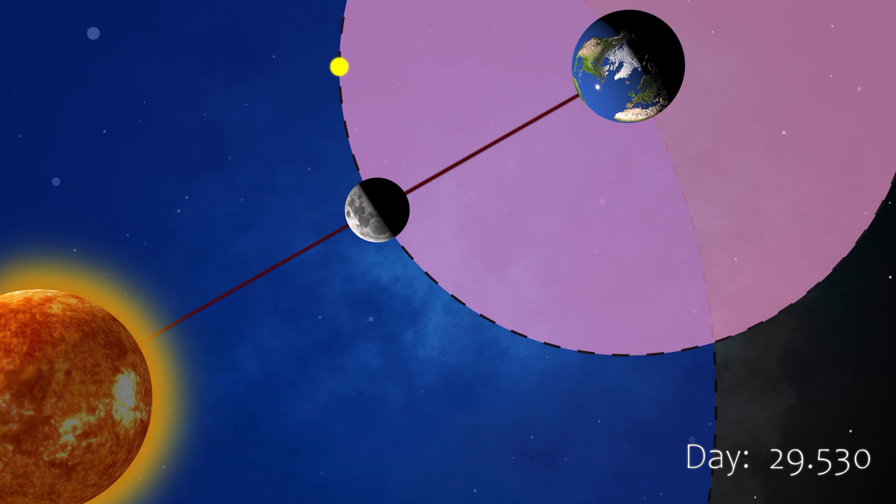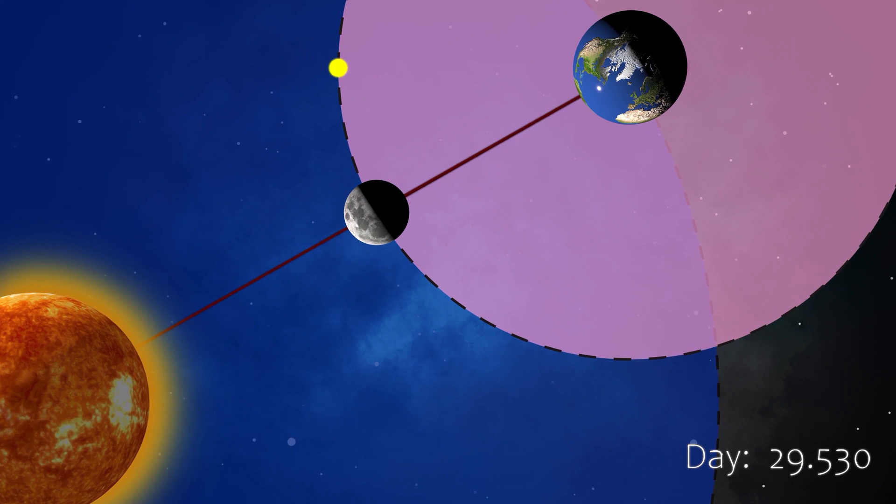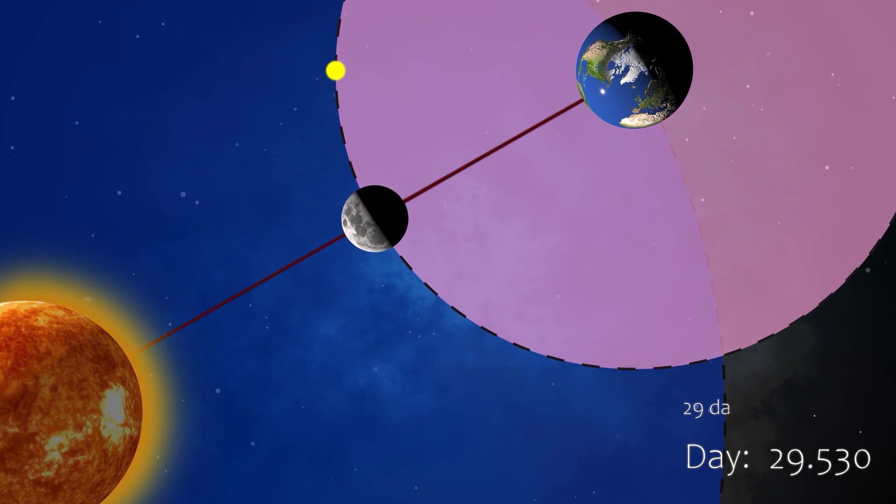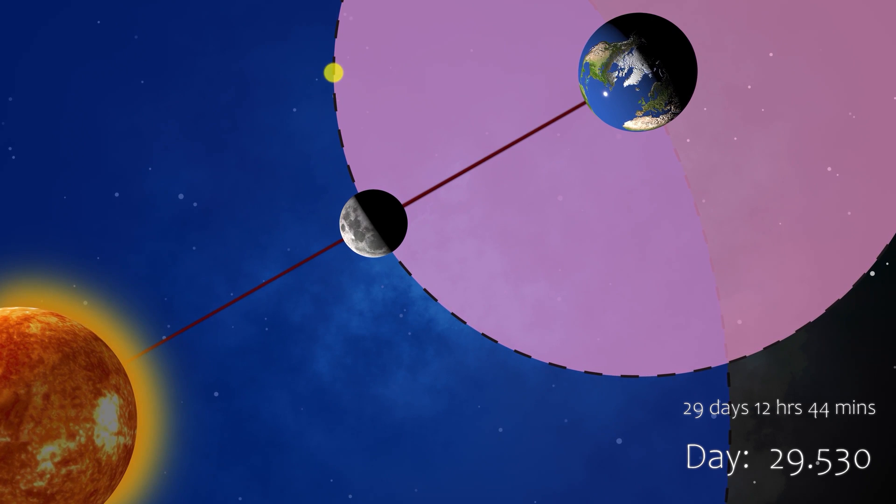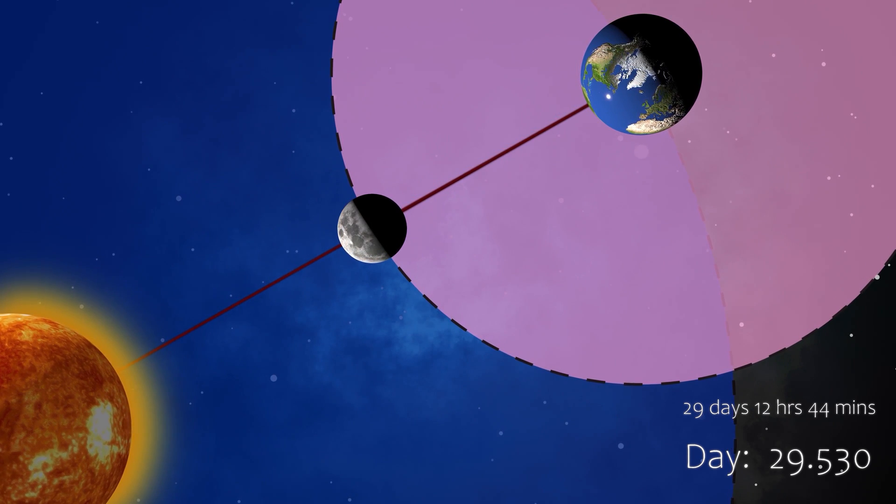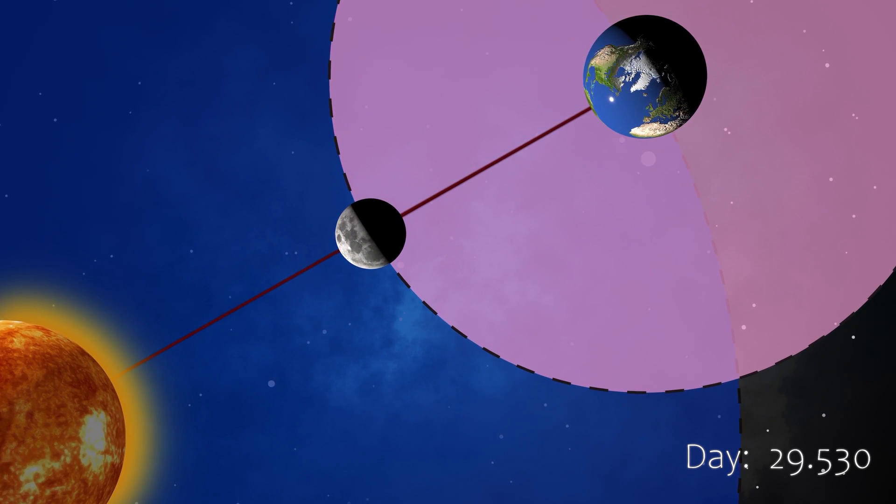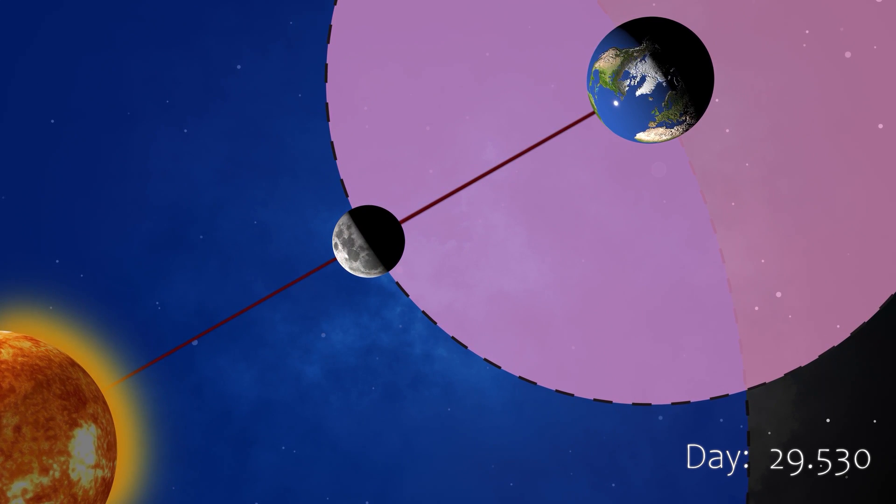So we observe that to go from one new moon day to the next new moon day, the moon takes around 29.53 days or 29 days, 12 hours, 44 minutes. This is called a synodic month.